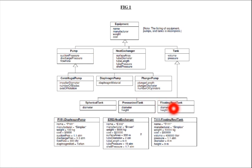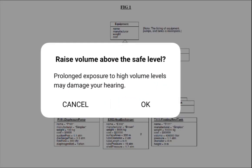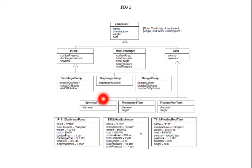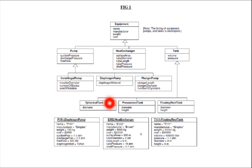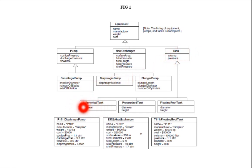Tank is a superclass here. What are the subclasses of tank? Spherical tank, pressurized tank, and floating roof tank. Volume information of the tank can be inherited by the spherical tank. It can use the same information, and along with that, diameter can also be used — spherical tank can use the information of volume and pressure from the superclass, and also add its own information like diameter.